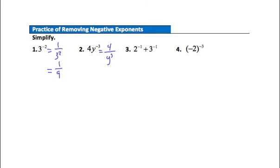Question 3 has two things taken to negative exponents. The first becomes 1 half, the second becomes 1 third. Adding these fractions with a common denominator of 6: 1 half with missing multiplier 3 gives 3 sixths, and 1 third with missing multiplier 2 gives 2 sixths. So 3 sixths plus 2 sixths gives a final answer of 5 sixths.